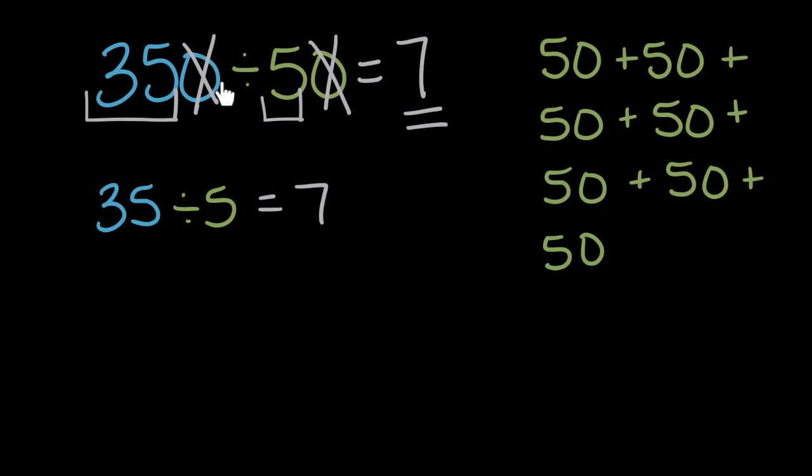Division is really the same as a fraction. So if we wrote this as a fraction, let's say 350 over 50, well this fraction bar right here is the same as the division sign up here. 350 divided by 50 is the same as 350 over 50. And when we have a fraction like this, we can simplify it.